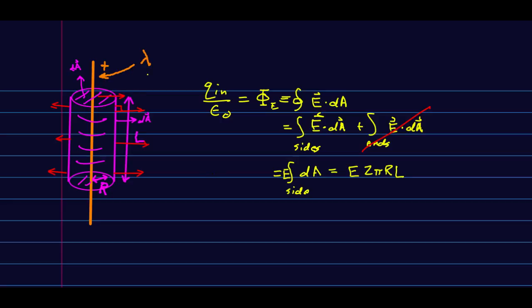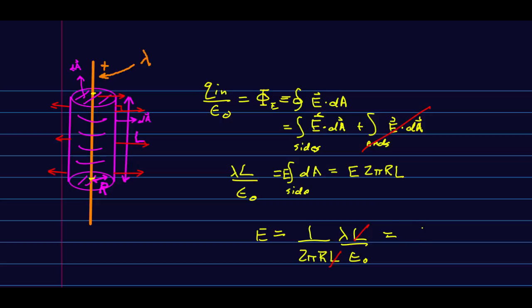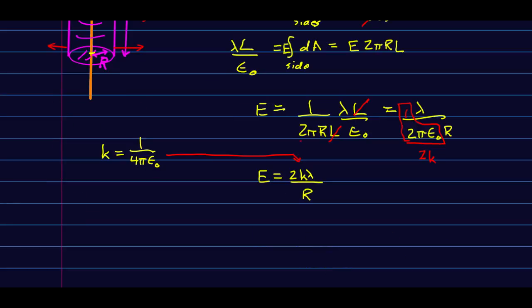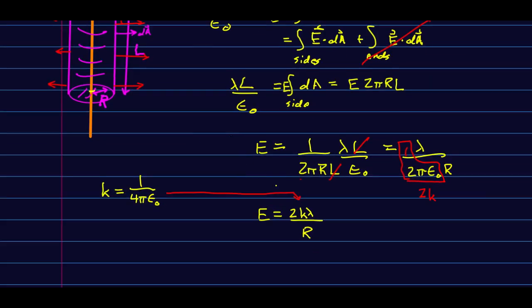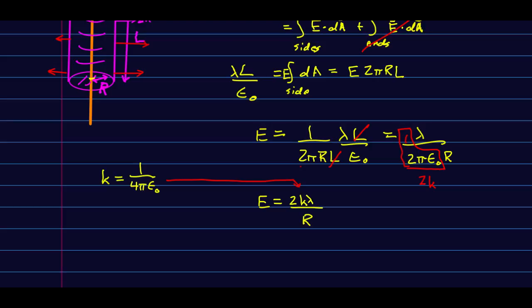Now let's look at Q inside. If the line has a linear charge density lambda, then Q inside is just the charge along the enclosed length, which is lambda·l. So E is now solved: notice the l's cancel, and in the end, after not an awful lot of work, I get lambda over 2π epsilon-naught r. Note k is 1 over 4π epsilon-naught, so 1 over 2π epsilon-naught is 2k, giving E = 2k·lambda/r. Other than calling the distance from the line r instead of x, this is exactly the result we got for an infinite line back in the E field's unit.